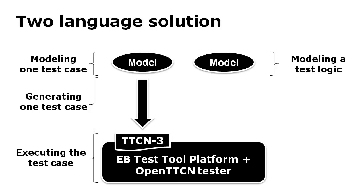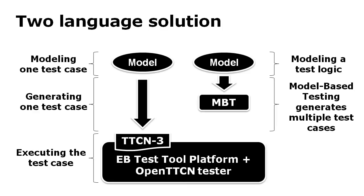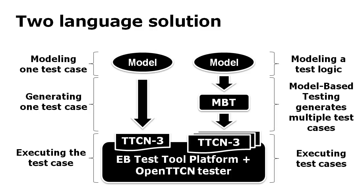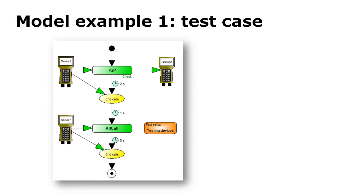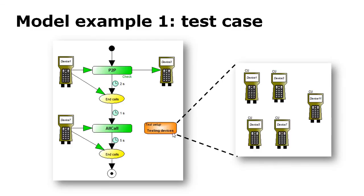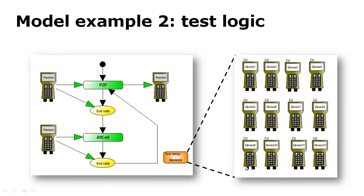The other approach they used was modeling just the test logic, and then a model-based testing tool generated multiple test cases from this logic. The modeling language looks like this: testing starts, device one makes a point-to-point call to device three, after two seconds ends the call, and so forth, with a number of testing devices applied. In the test logic approach, you don't specify which particular device is used — it's a random device — and the test generator goes through all the alternatives available in the test setup.